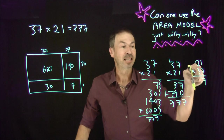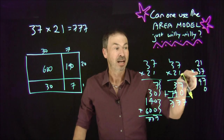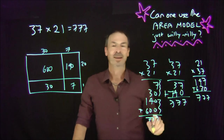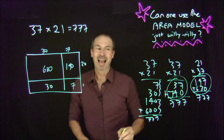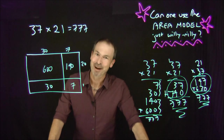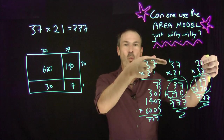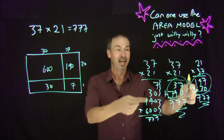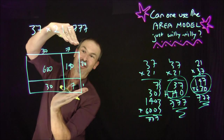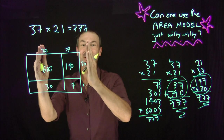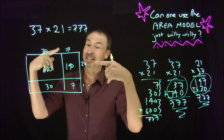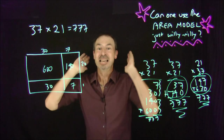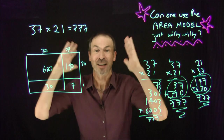7 times 1 is 7, 7 times 2 is 40, then we put a 0 there, 3 times 1 is 3, 3 times 2 is 6, add up to get 777. But that looks completely different, and it's quite surprising we get the same answer. If all you know is the compact standard algorithm, this would be mysterious. But 37 times 21 has to be the same as 21 times 37: if I just turn the picture around 90 degrees, it's the same areas and the same computation. I love the area model — it makes perfectly good sense.